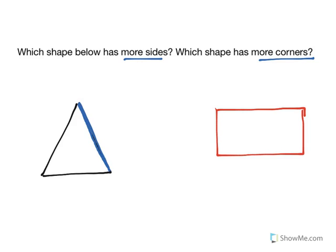So here I'm tracing along one side. So I could see that this triangle over here has one side, at the bottom is side two, and then it's side three. So this triangle has three sides.